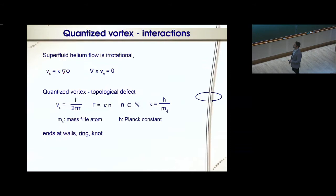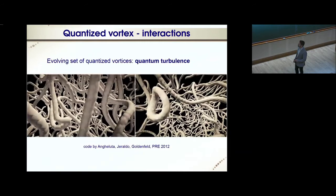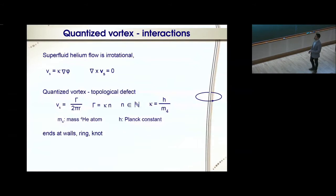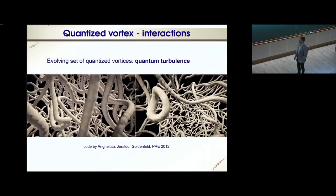Superfluid flow is irrotational. The only vorticity is on quantized vortices, which are topological defects, and the circulation is a multiple of the quantum circulation, which is the ratio between the Planck constant and the mass of the helium atom. These vortices are microscopic in length but of atomic size in width. They either end at the walls or loop around themselves in rings or knots. An evolving set of these quantized vortices will be called quantum turbulence. You can see here some renderings of the vortex tangle, for example, a vortex ring.